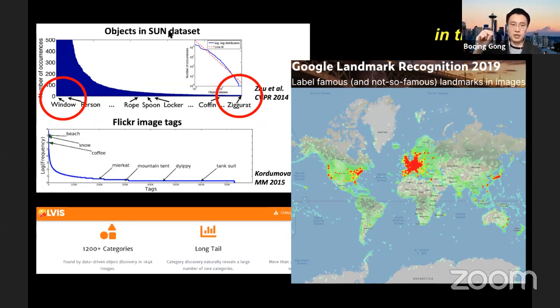So it's compiled for scene understanding. It's balanced across different places, different scenes. However, if we check the objects in this data set, they are long tailed because we never tried to manually tune the distribution of the objects. Second example is Flickr. If you check the Flickr tags, they also follow a long tailed distribution.